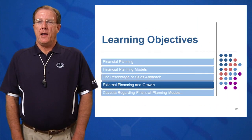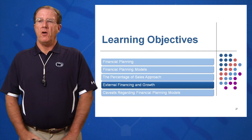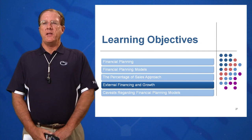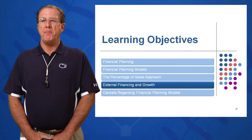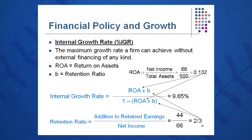Moving on to learning objective number four, let's look at some key growth ratios and how external financing impacts growth of the company. It takes money to make money, so the question is how much. In the last example, we had a plug of 47.2 that we needed to grow the company at 20%.